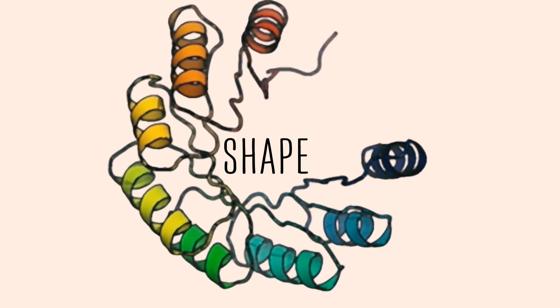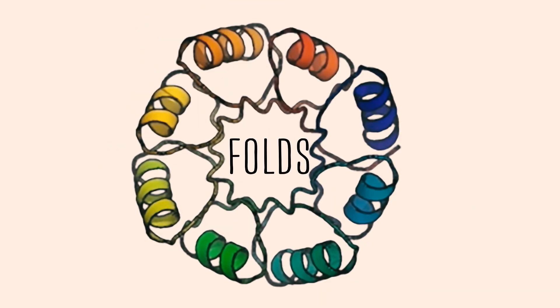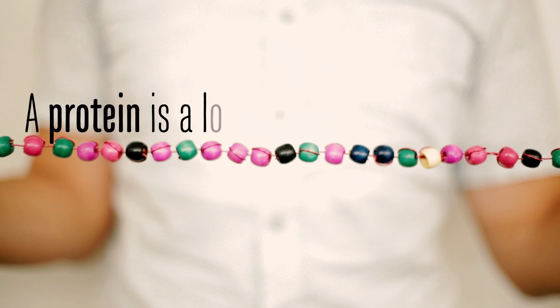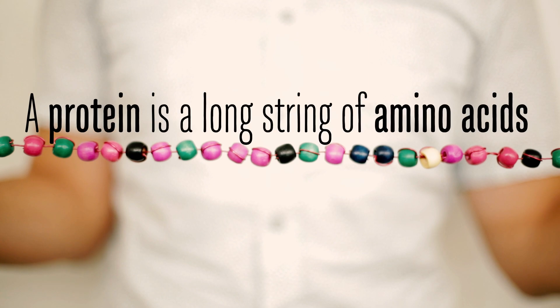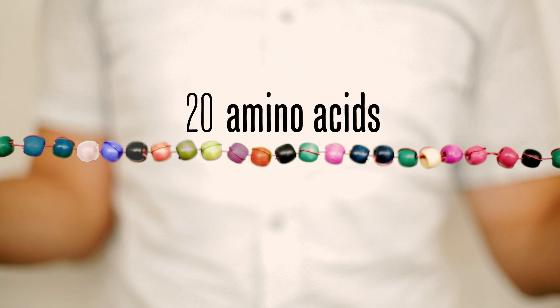They can take many different shapes. Scientists call these folds. Unfolded, a protein is a long string of amino acids. There are 20 different amino acids, and each one of them has its own chemical behaviors.